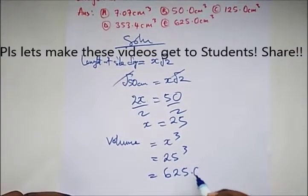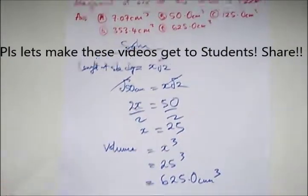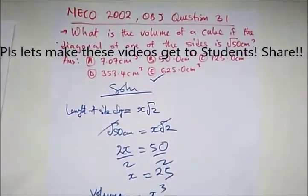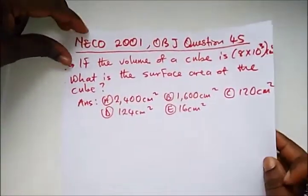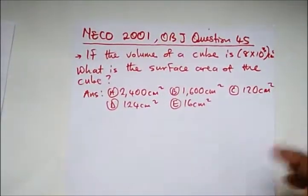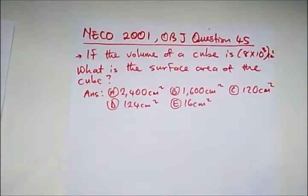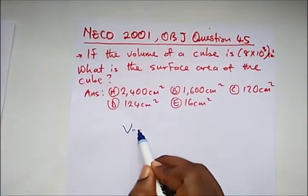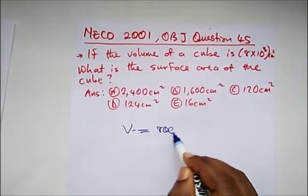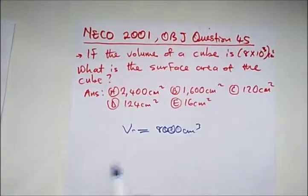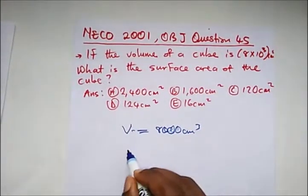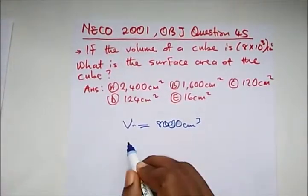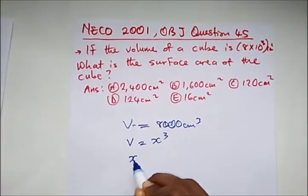Our next question from NECO 2001, OBJ question 45. It says if the volume of a cube is 8×10³, that is 8,000, so our volume is 8,000 cm³. What is the surface area of the cube? All we need to do is find x. Remember our volume is x³.